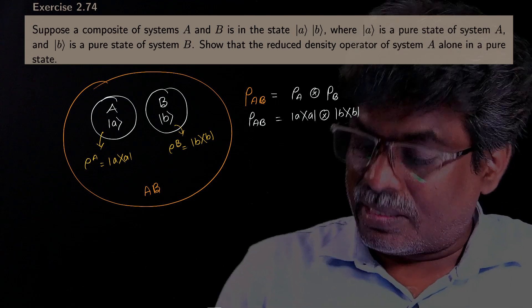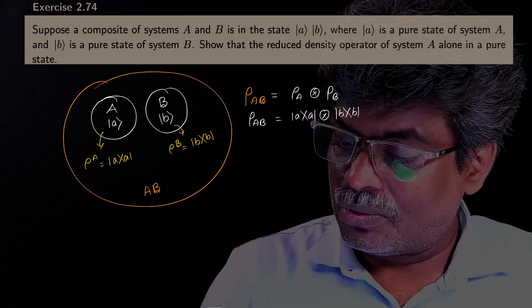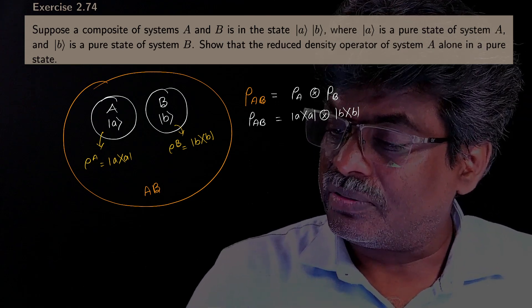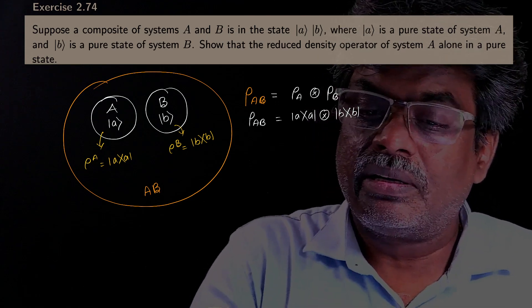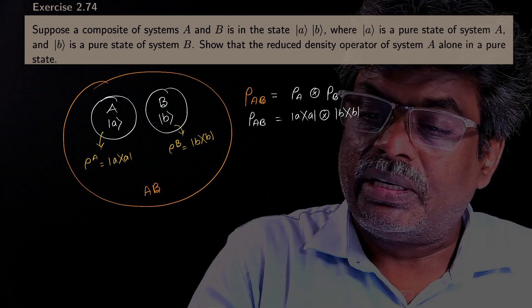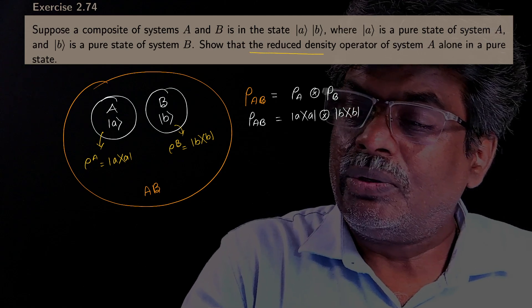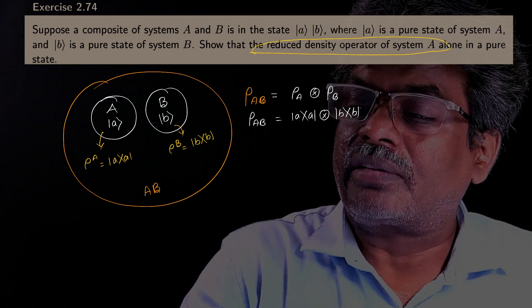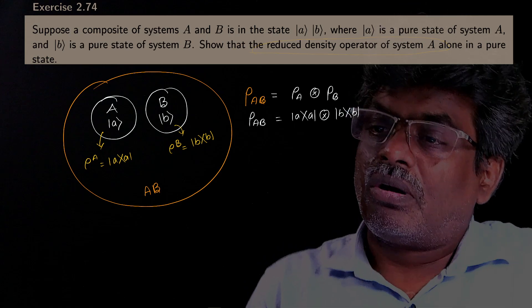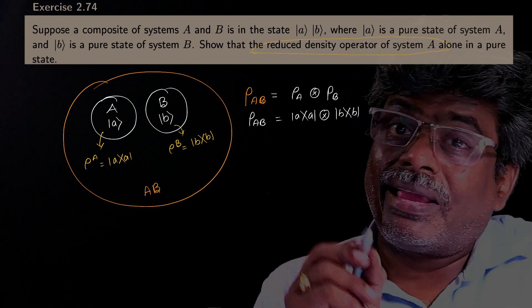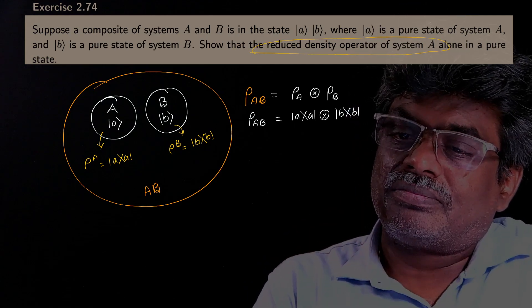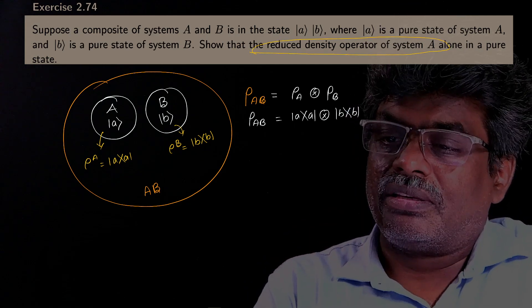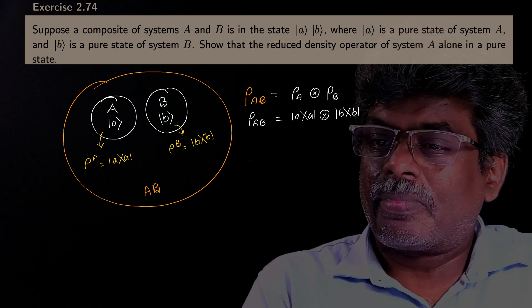Now, what is being asked — observe this carefully. The statement says: show that the reduced density operator of system A alone. So, what is the meaning of this?